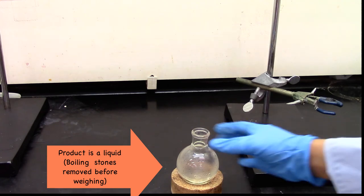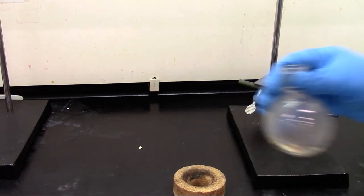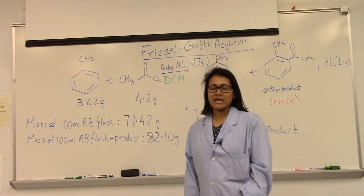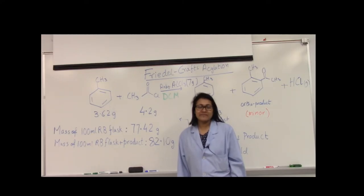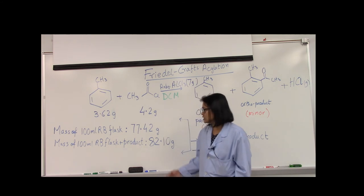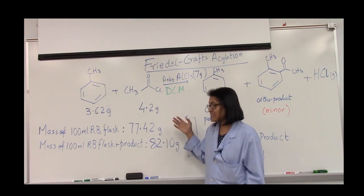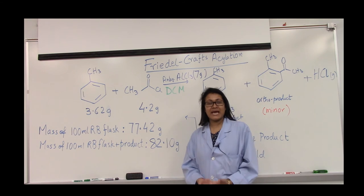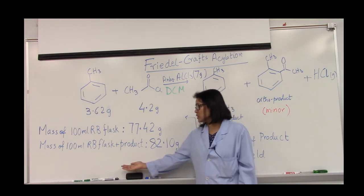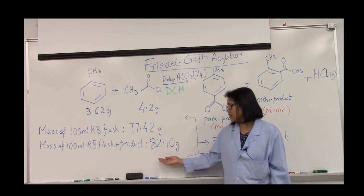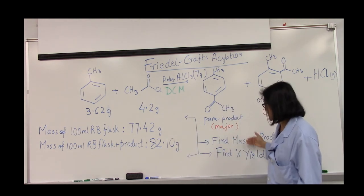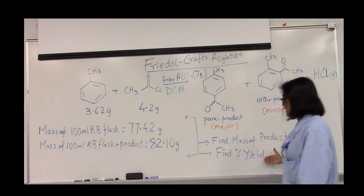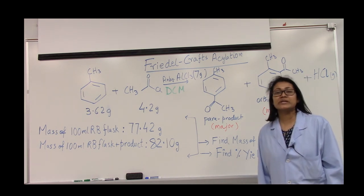Now we'll go ahead and weigh this. End of the reaction, we weighed our product after we had done a simple distillation. The 100 ml round bottom flask used in the simple distillation weighed 77.42 grams. And at the end of the simple distillation, it had the product. And once we cool it, we weighed it. It came around 82.10 grams. These two numbers should help you find the mass of the product and then find the percent yield for the Friedel-Craft reaction today. Thank you.